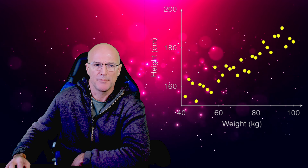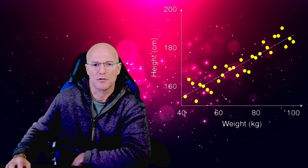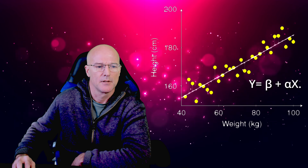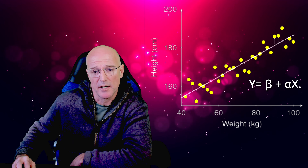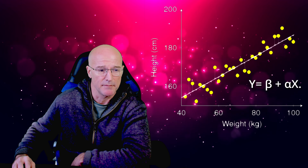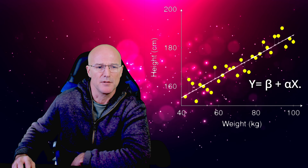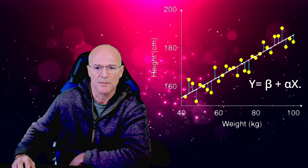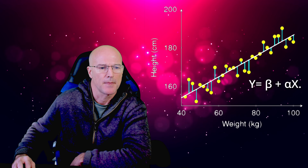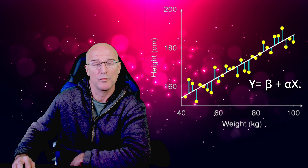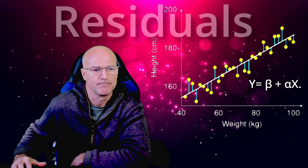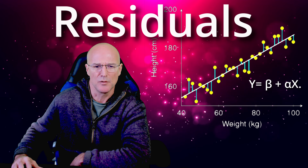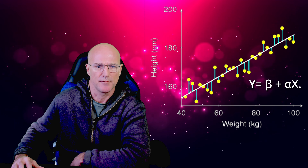When you correlate x with y — say height versus weight — you'll get a plot like this. A line function can be used to describe the line of best fit. This is the line that cuts through the data set with the smallest total error. Error is the difference between predicted values and actual values observed. The errors are called residuals. This has been an example of single variable regression: height versus weight.